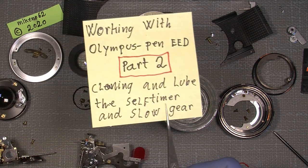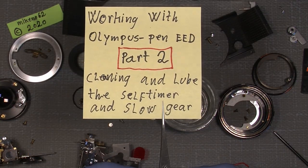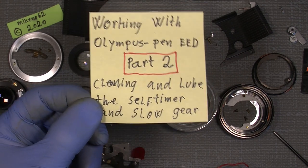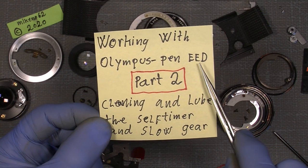And now it's time to continue with the cleaning and lubing the self-timer and the slow gear in the Olympus Pen EED.